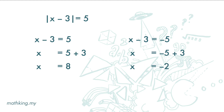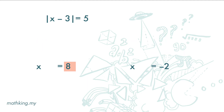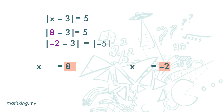Let's substitute 8 into the left-hand side of the original equation and we get 5. If we substitute negative 2 into the left-hand side of the original equation, we get negative 5, and the absolute value of negative 5 is 5. So the solution to this equation is x equals 8 and x equals negative 2.